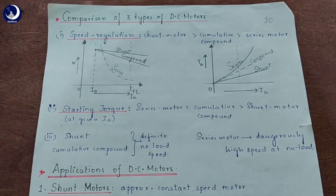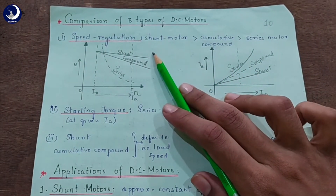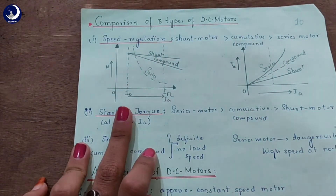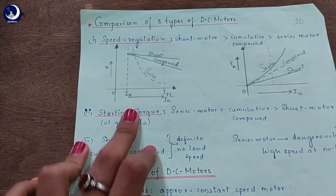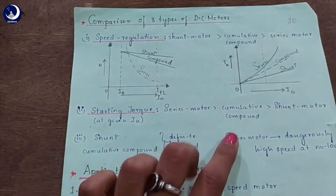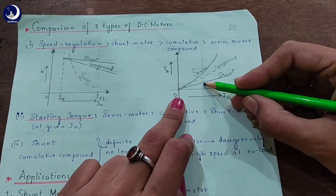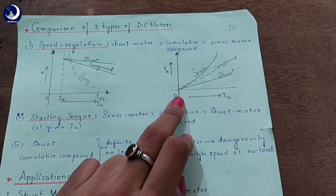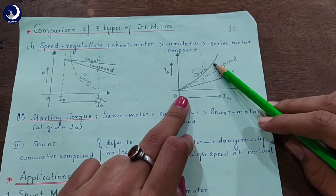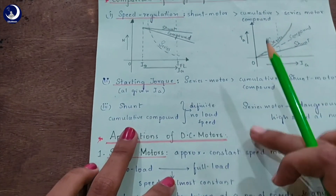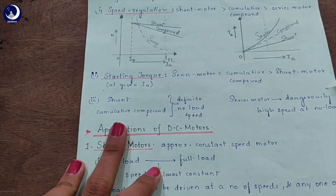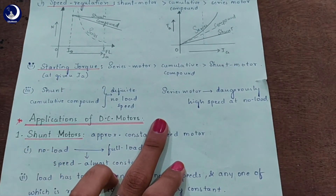Since we have seen the three types of DC motors, let's compare them. First, regarding speed regulation: the speed regulation of a shunt motor is better than that of a series motor, but the speed regulation of a compound motor lies between the shunt and series motor. Second, at a given armature current Ia, the starting torque of a series motor is more than that of a shunt motor, whereas the starting torque of a compound motor lies between the series and the shunt motor. Third, both shunt and cumulative compound motors have a definite no-load speed, whereas the series motor has a dangerously high speed at no load.